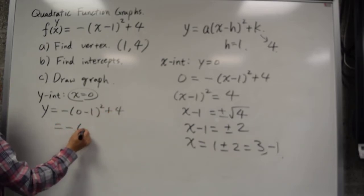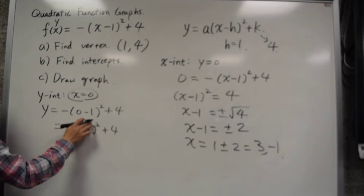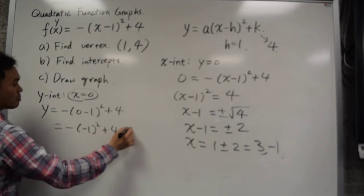So it's negative, negative 1 squared plus 4. Negative 1 squared is positive 1. Negative 1 plus 4 is positive 3.